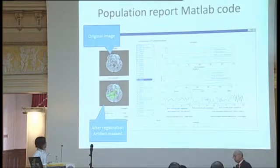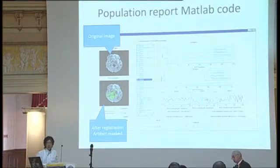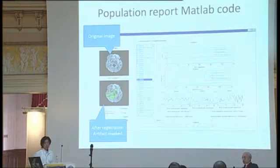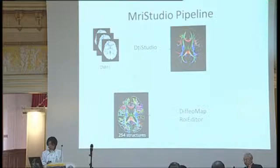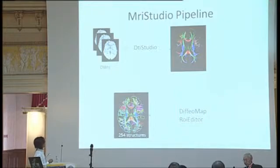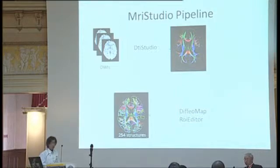In this way, out of the tens of data sets you collected, you can identify outliers and have an objective measure to see which data is most affected based on the population distribution. This is the quality control pipeline we have been working on.